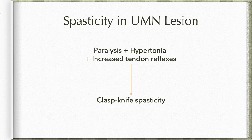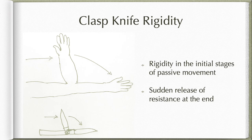Upper motor neuron lesion has another classic feature called spasticity — a combination of paralysis, hypertonia, and increased tendon reflexes. Typical clasp knife spasticity is seen in upper motor neuron lesion. When we try to passively move a part of the limb, there is rigidity in the initial stages and then a sudden release of resistance at the end, like the resistance felt while opening a clasp knife — that is clasp knife rigidity, again a classic feature of upper motor neuron lesion.